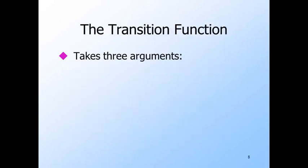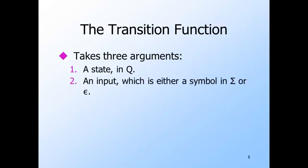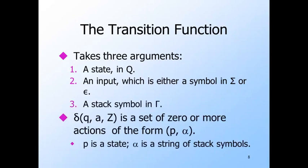The transition function for a PDA has three arguments. First comes a state, as for finite automata. Second, an input symbol or epsilon, as for the epsilon NFA's transition function. And last, the symbol at the top of the stack. Delta for state Q, input A (which can be epsilon), and stack symbol Z is a set of zero or more actions. Each action consists of a next state P and a string alpha of stack symbols, possibly empty, with which to replace the top symbol Z.